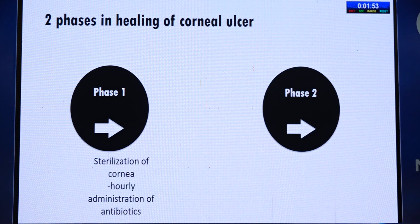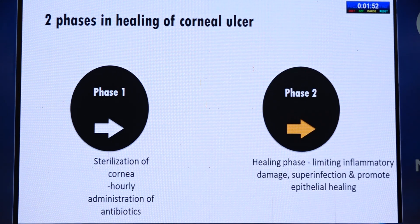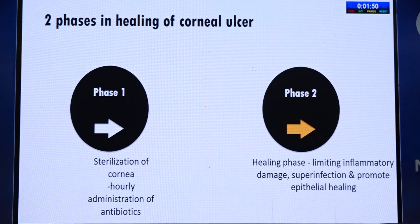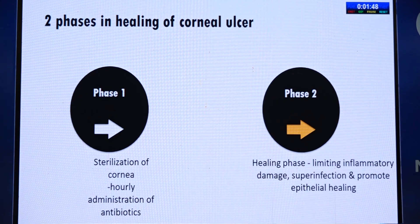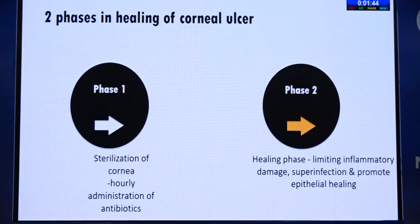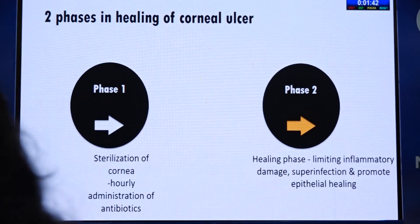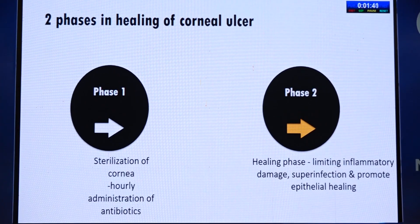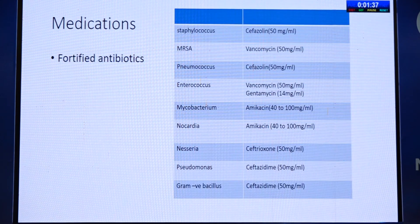There are two phases in healing of the ulcer. Phase one is sterilization of the cornea with intensive treatment to eliminate organisms. Phase two is once scarring begins and healing is underway — you then limit the inflammatory response and super-added infection. Fortified antibiotics are the treatment of choice in bacterial cases; the most commonly used is fortified cefazolin at 50 mg/ml.